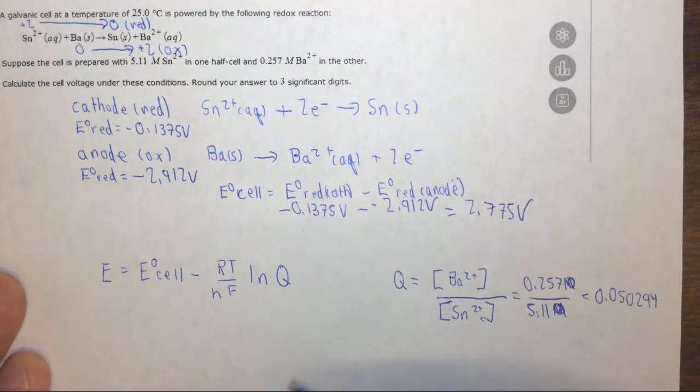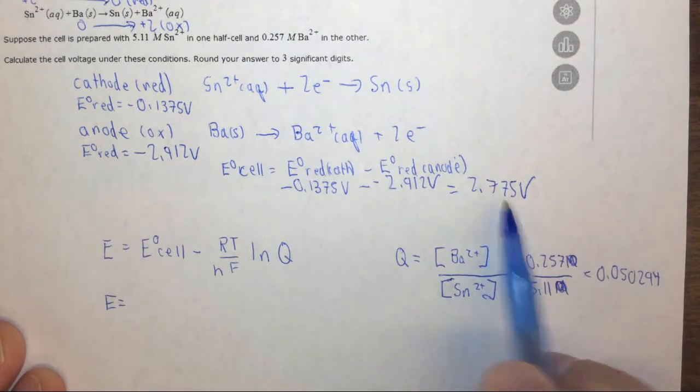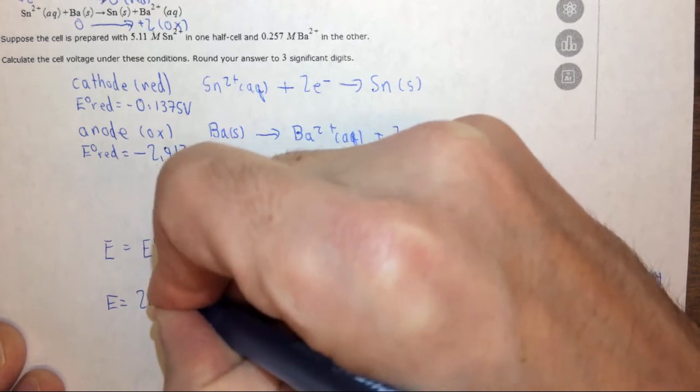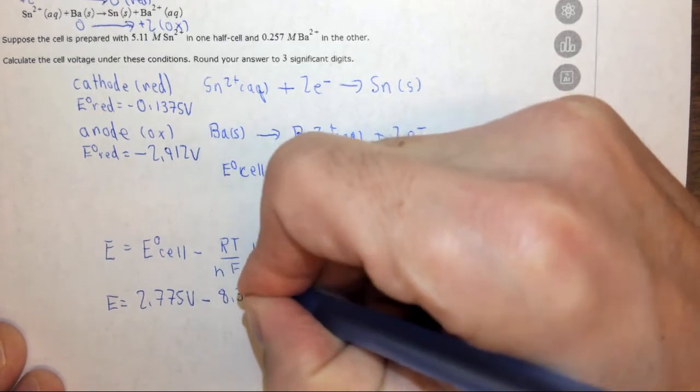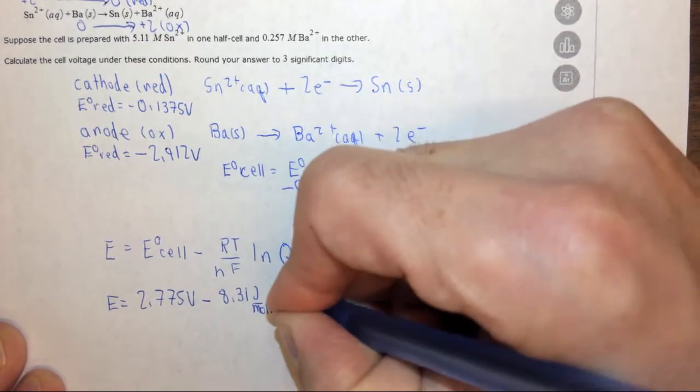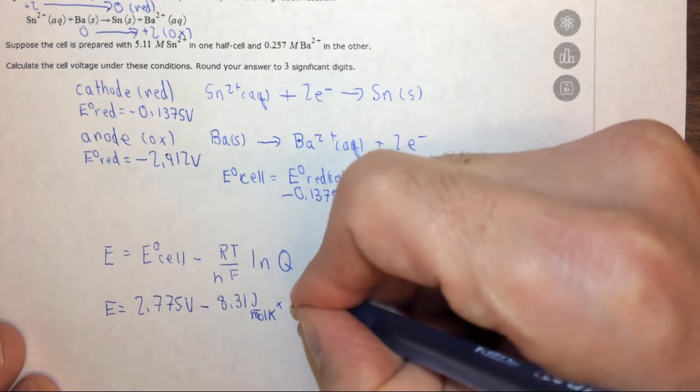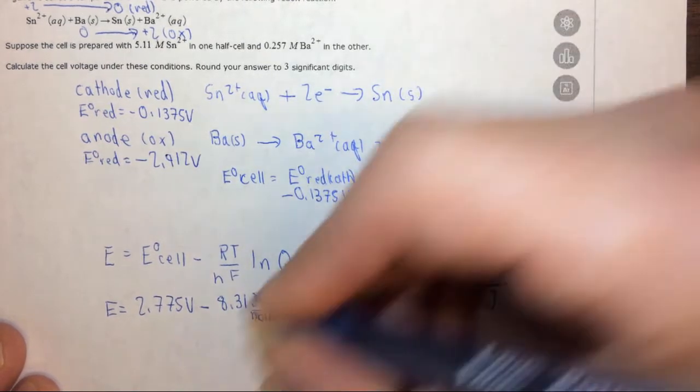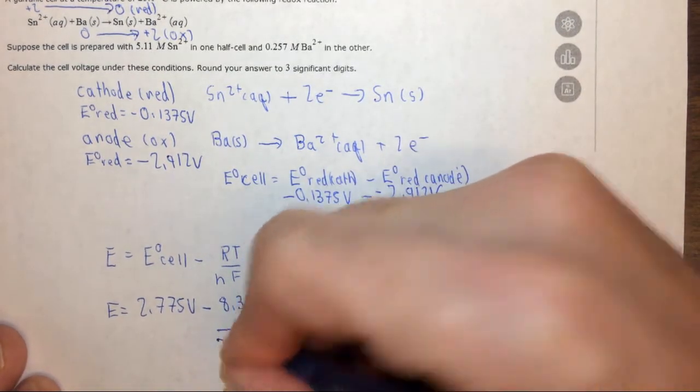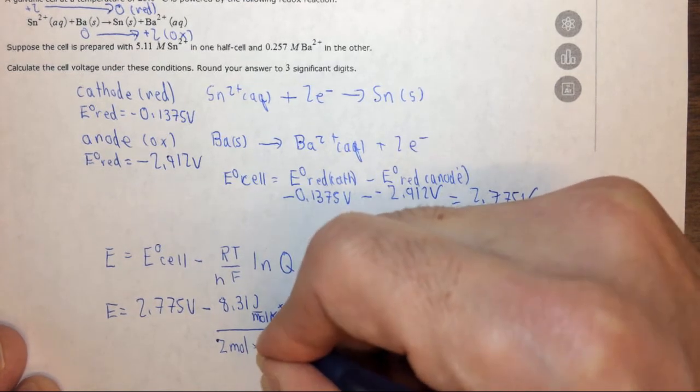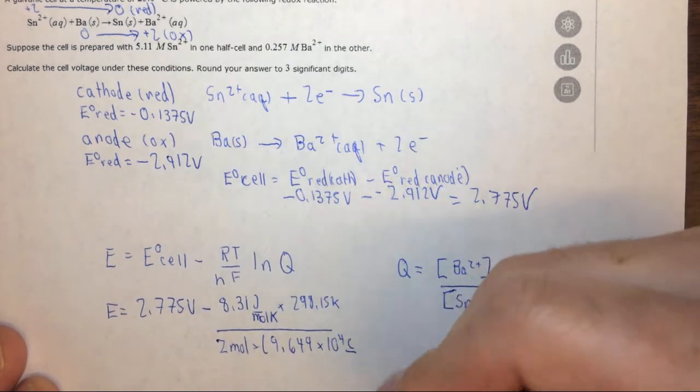We now have everything we need to plug in. So using the Nernst equation we have E equals the standard reduction potential which is 2.775 volts minus R, we want to use 8.31 joules per mole K. The temperature is 25, excuse me, 25, but we want it to be in K. So 298.15 K divided by n, there are two moles transferred, so we have two moles, times Faraday's constant which is 9.649 times 10 to the 4 Coulombs per mole.